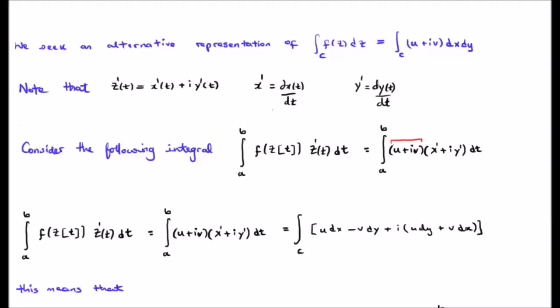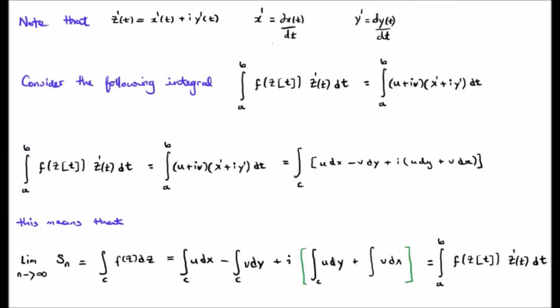If we consider the integral of f of z parameterized with t, multiplied by z prime of t — the derivative of the parameterized curve — integrated dt, and multiply it out using u plus iv times x prime plus i times y prime, we get the expression with real components u·dx minus v·dy and imaginary components u·dy plus v·dx. This is exactly the limit of S_n as n goes to infinity — our line integral. This means our line integral is equivalent to this particular integral, confirming the equivalence of the two representations.